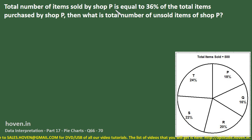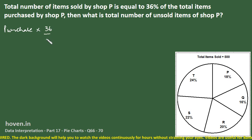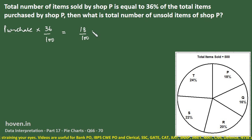Total number of items sold by shop P is equal to 36% of the total items purchased by shop P. Then what is the total number of unsold items of shop P? From this table we can find out the sale, and the first part of the statement will help us obtain the purchase. The difference will be unsold items of shop P. So purchase into 36% equals the sale of shop P, which is 18% of 500.